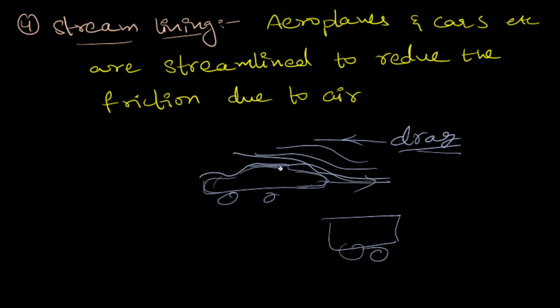That's why in the manufacturing process, airplanes and cars are streamlined to reduce friction due to air. This drag is nothing but friction which is produced by the air. Airplanes are shaped smoothly here in upward direction and downward direction to reduce speed decrease. This is streamlined manufacturing.